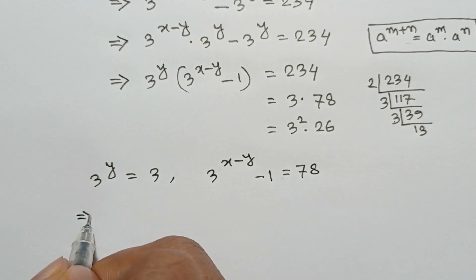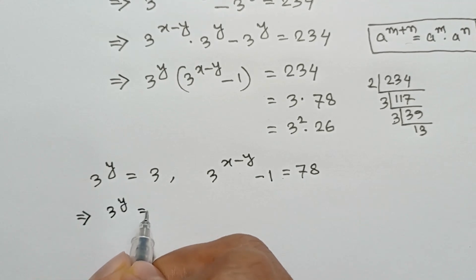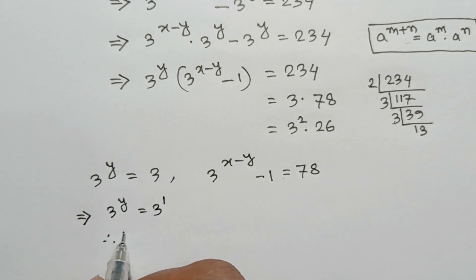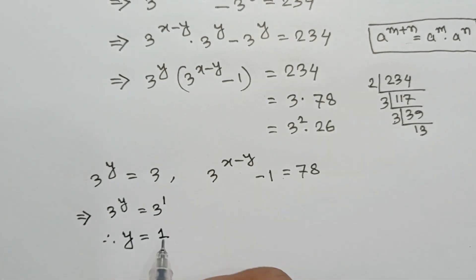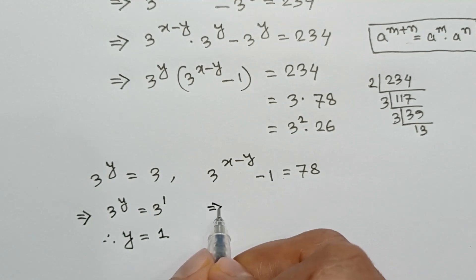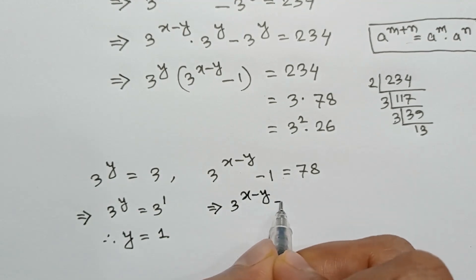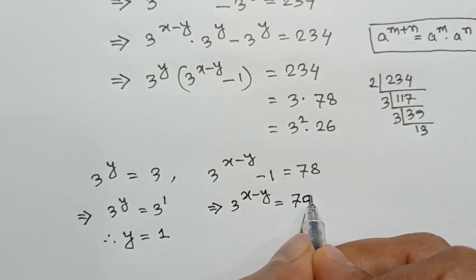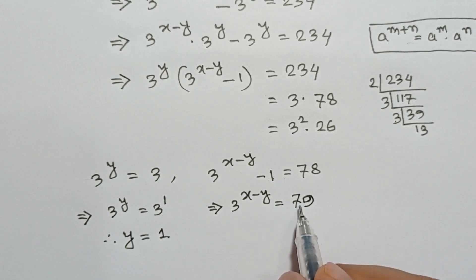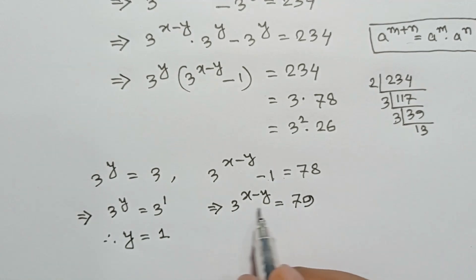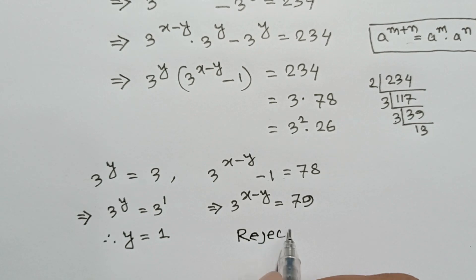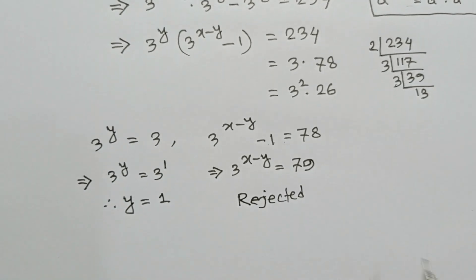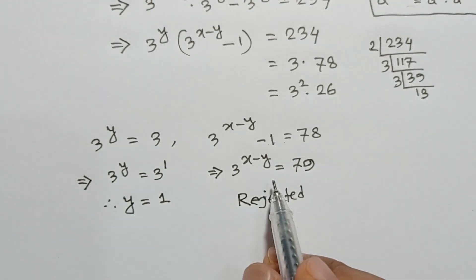3 to the power y equals 3 to the power 1, so y equals 1. Then 3 to the power x minus y minus 1 equals 78, meaning 3 to the power x minus y equals 79. But 79 is not a power of 3, so there is no integer solution and this case is rejected. We cannot find any natural number solution from here.